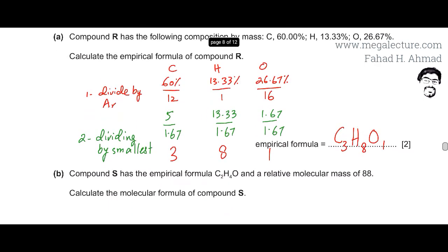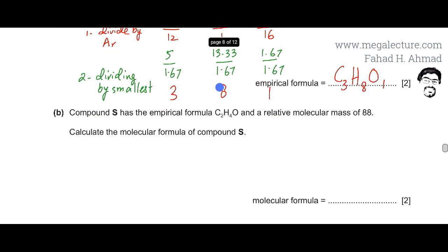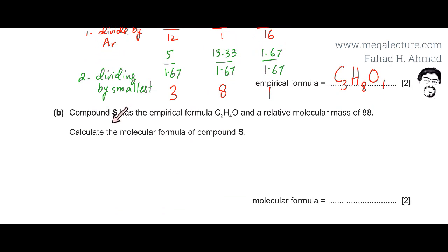Moving to the next part of the question, we found the empirical formula. Now you are given compound S, which has the empirical formula C2H4O and a relative molecular mass of 88. We are supposed to calculate the molecular formula of S.